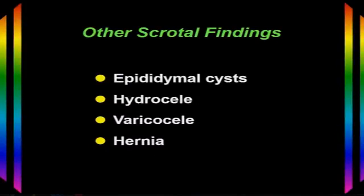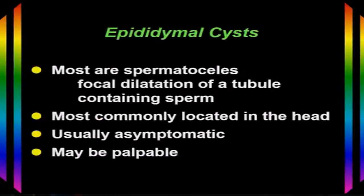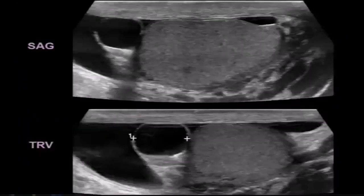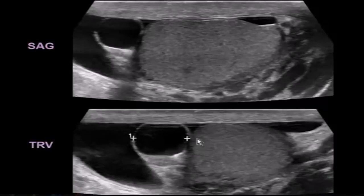Besides the testicle, we look at other things in the scrotum including the epididymis and the scrotal sac, looking for fluid from a hydrocele, a varicocele, or even a hernia. Epididymal cysts and spermatoceles are typically located in the epididymal head, representing focal dilation of tubules carrying sperm. They're usually asymptomatic but may be palpable. Here's a patient with an epididymal head cyst — the testicle is normal, but above it is a well-defined anechoic cyst with thin smooth walls.